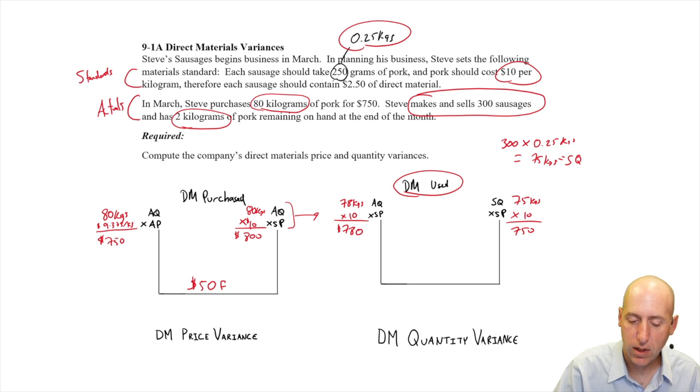750 compared to 780. This is a $30 quantity variance. Now, is it favorable or unfavorable?